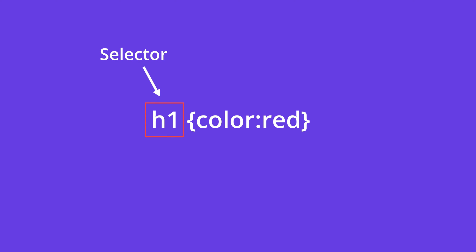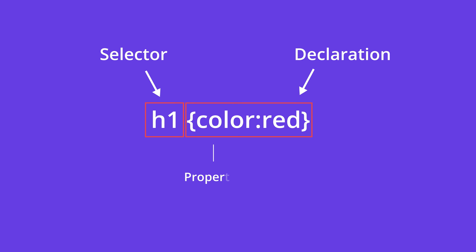CSS works by allowing you to combine rules with the elements in the HTML document. These rules define how the component's content should be presented. A rule set is created of a selector and declaration block. The selector points to the HTML element you want to style, and the declaration block sets out how the element referred to within the selector should be styled.